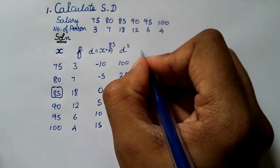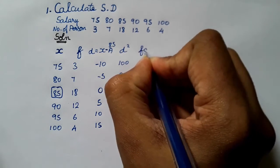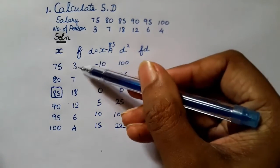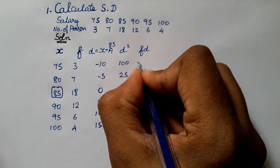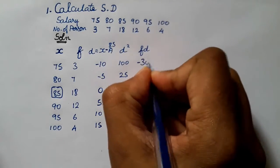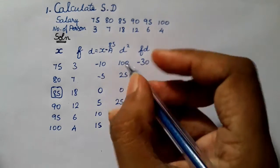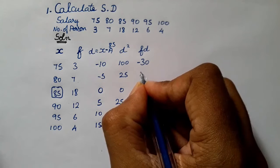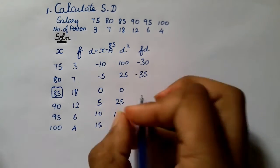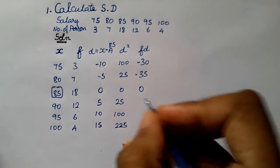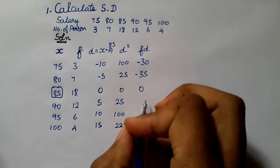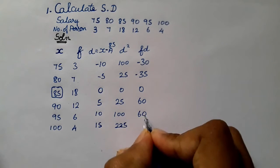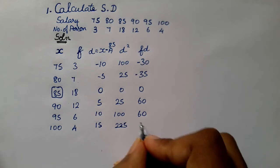Next, let's calculate FD. F is the frequency column and D is the deviation column. 3 into minus 10 gives minus 30. 7 into minus 5 gives minus 35. 18 into 0 is 0. 12 into 5 is 60. 6 into 10 is 60. 4 into 15 is 60.